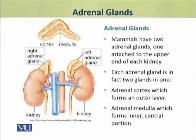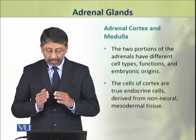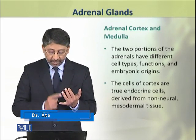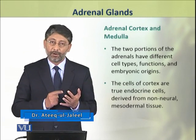The adrenal glands are in fact dual glands. Each gland has two layers: an outer layer and an inner layer. The outer layer is known as the adrenal cortex, whereas the inner central portion is known as the adrenal medulla. These two portions of the adrenal glands have different cell types, different functions, and different embryonic origins.